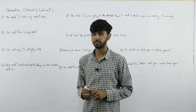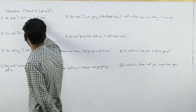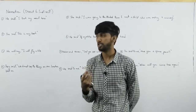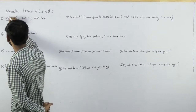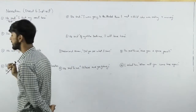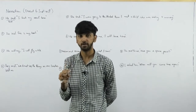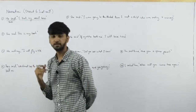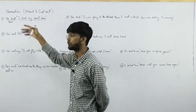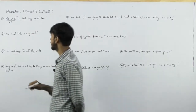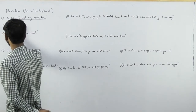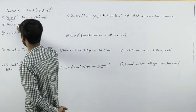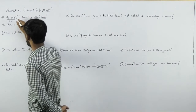Let's discuss some examples. He said, 'I took my meal here.' First of all, we have to check that we have indirect speech. We need to check what is present, past, or future. We have seen which speech is past. We have to change the pronoun, tense, and words. This sentence is an assertive sentence. You will remove the inverted commas and use 'that.'